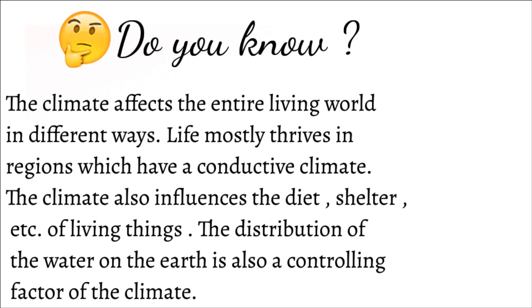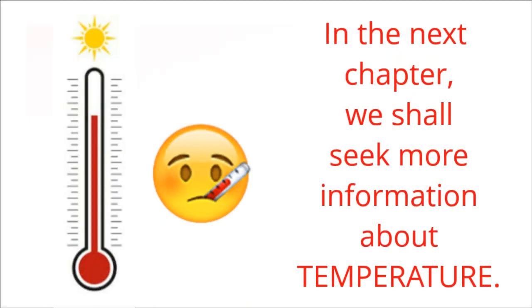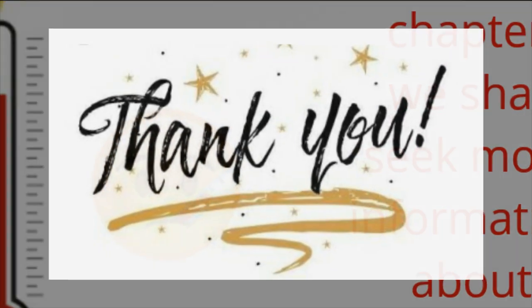The climate also influences the diet, shelter, and lifestyle of living things. For example, people in hilly regions use woollen clothes much more than people in hot areas. Diet, shelter, and lifestyle are all different in different regions. The distribution of water on the earth — including rainfall — is also a controlling factor of climate. In the next chapter we shall seek more information about temperature. Thank you.